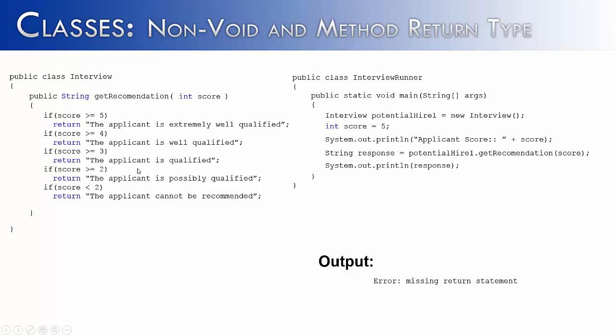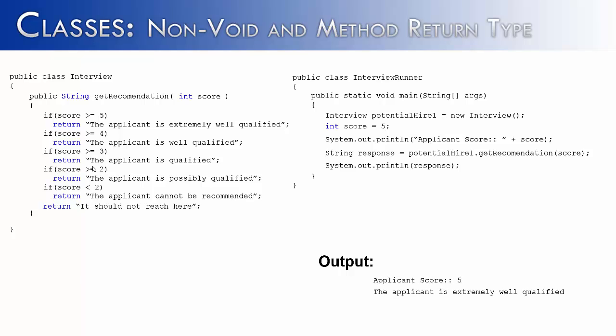Java doesn't know that we've considered all possibilities. It has to know that the method is going to return something when it's done. So if you have a series of if statements with multiple return statements, you must have one return statement outside the if statements to indicate what happens if everything above is false. I've done that here to say 'it should not reach here'. Logically it should never get past those five return statements, but if it did, I'd know there's a problem in my code. With that last return statement, the missing return statement error goes away, and it prints exactly as expected: 'applicant score 5, the applicant is extremely well qualified'.